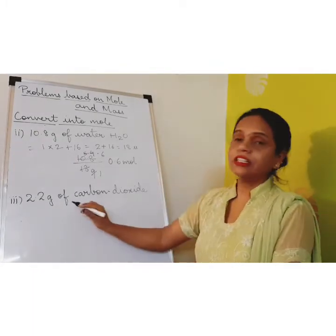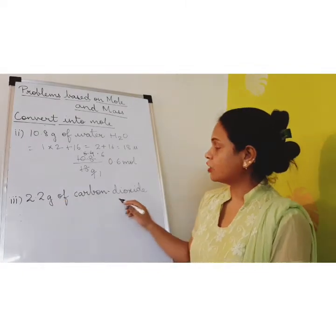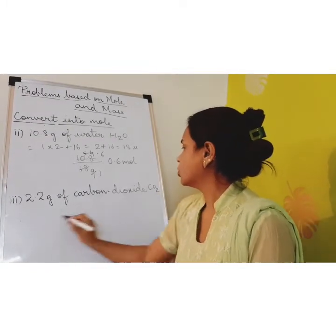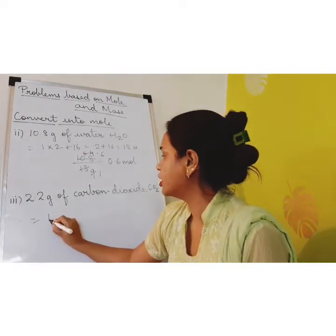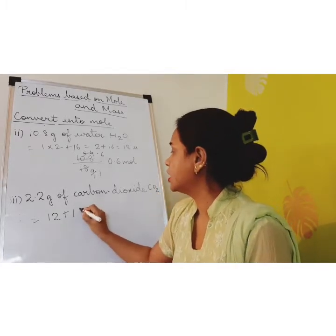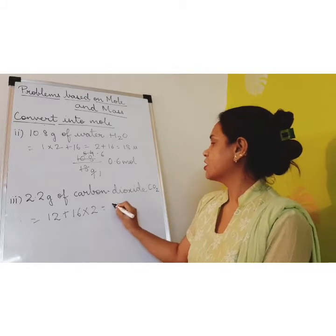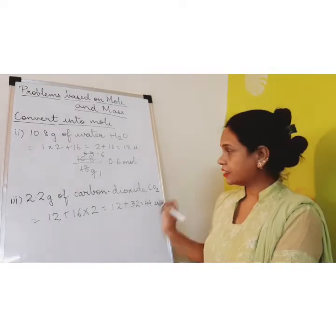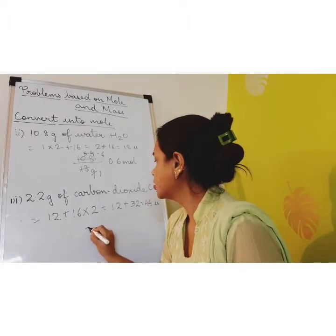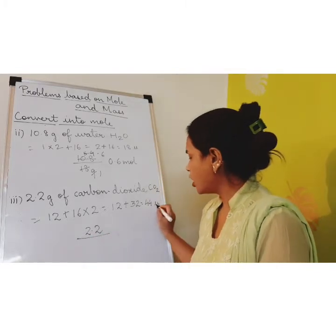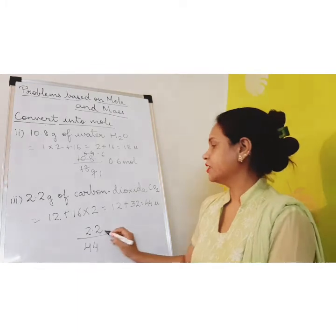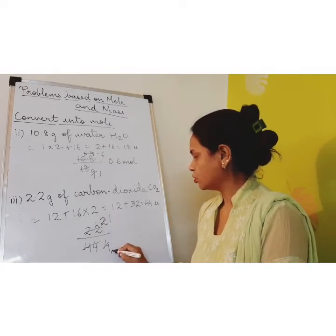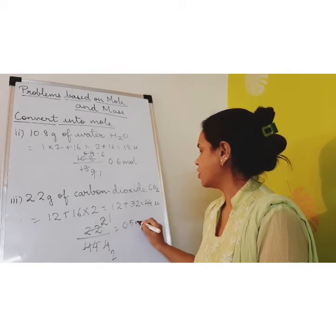Then we come to the next one. The given mass is 2.2 grams of carbon dioxide. First let's find out the molecular mass of CO₂: for carbon it is 12, plus for oxygen it is 16 into 2. That gives us 12 plus 32, which equals 44. So the number of moles is 2.2 upon 44, which equals 0.05 moles.